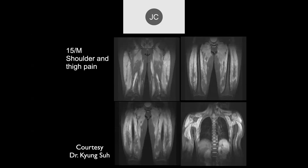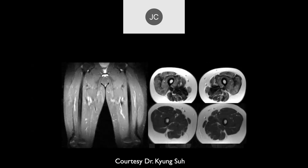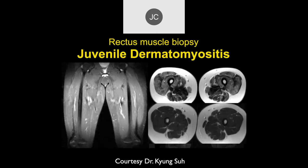These are probably T1 fat-sat post images, and these are probably PD fat-sat images, and then here are T2 and PD images in the axial plane. It looks like diffuse myositis — it's a little spotty, which you can get, but it looks very symmetric. This was juvenile dermatomyositis, and they biopsied the rectus femoris muscle to get the diagnosis.